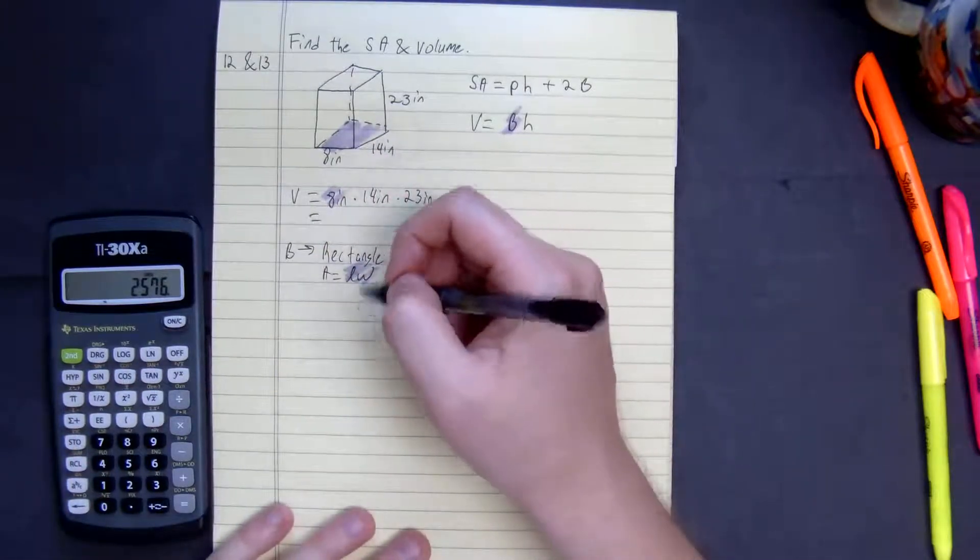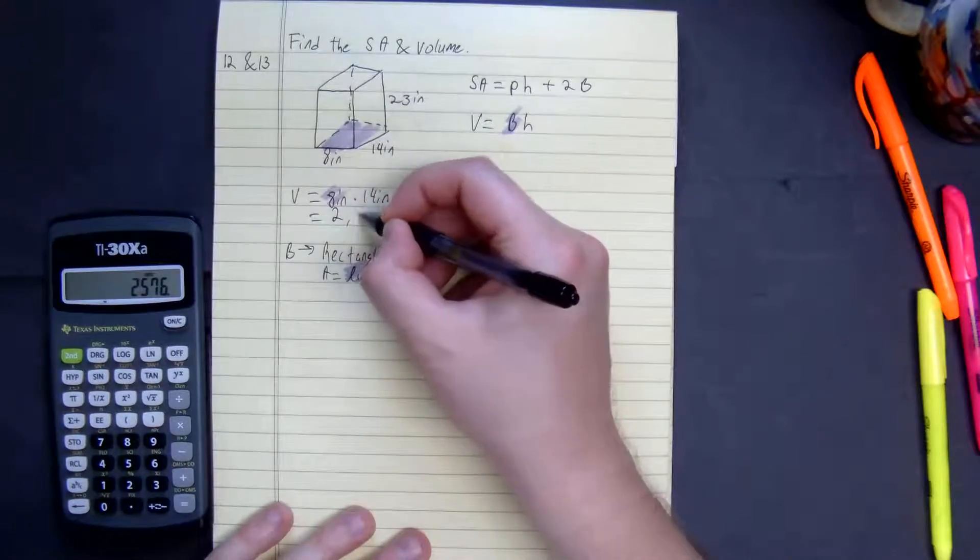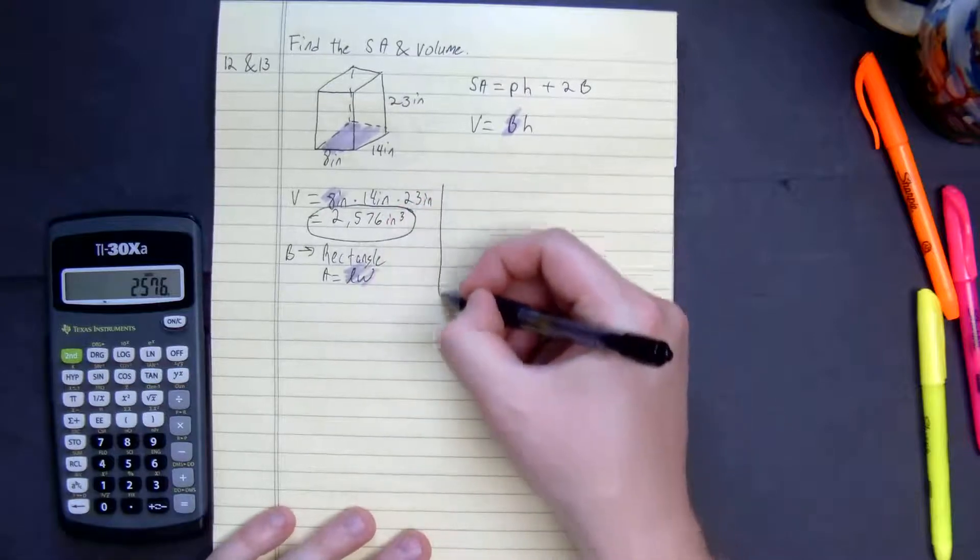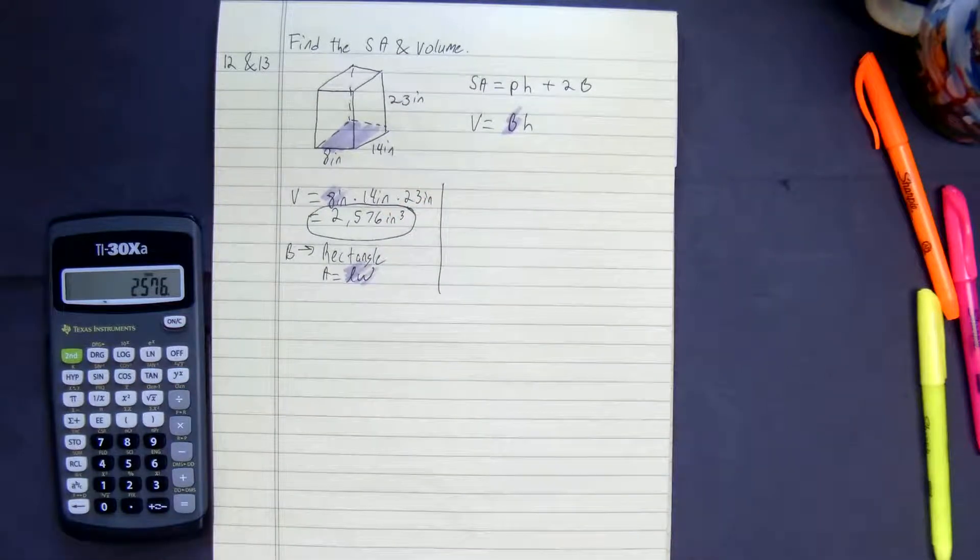Volume is three dimensions. So we get the volume is equal to 2,576 inches cubed. All right, so that's our first answer.